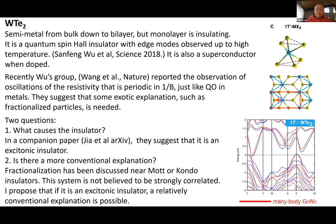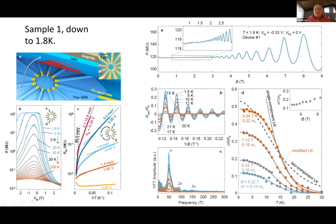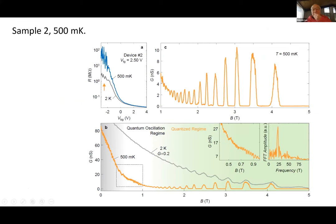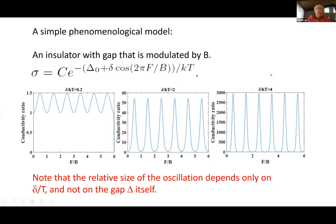The data went by very fast—you see these oscillations as a function of gate voltage, and as they go to low temperature it becomes very sharp spikes. The first point I want to make is you can make a very simple phenomenological model. If you have an insulator with a gap, the conductivity is activated.